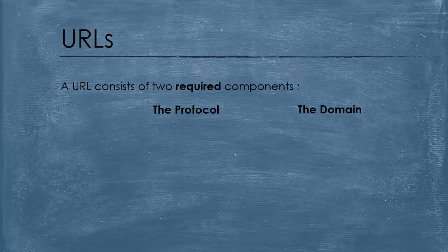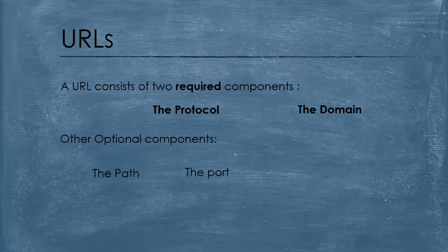A URL consists of two required components: the protocol used to connect, and the domain or IP address to connect to. You can see a URL that has other information too, but that's optional — such as the path, which locates the file or directory on the server, and you can also see the port and other components. Let's bring a URL, dissect it, and explain what each part does.